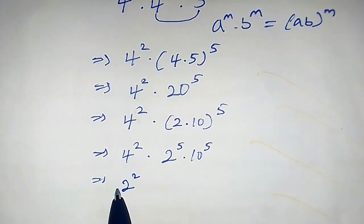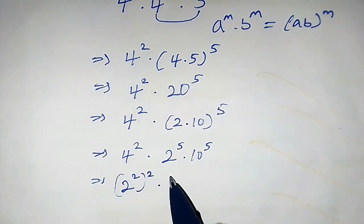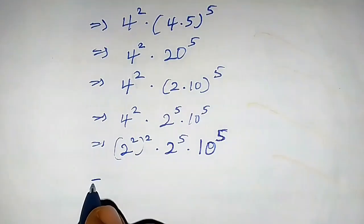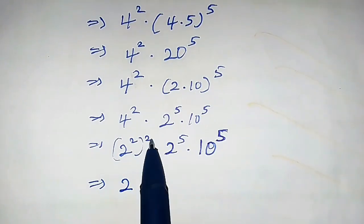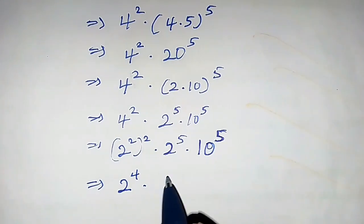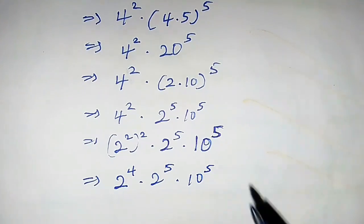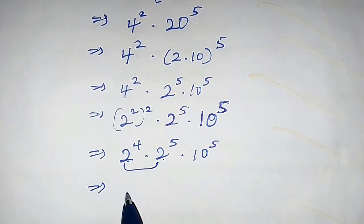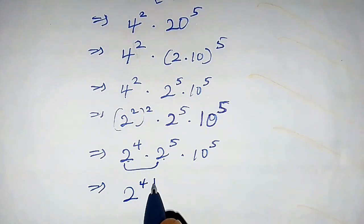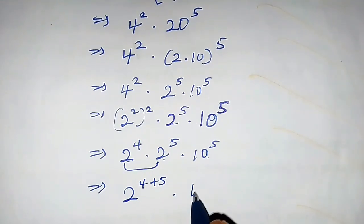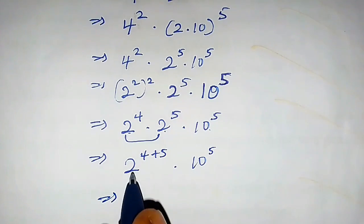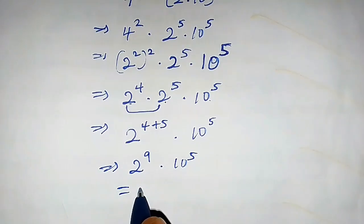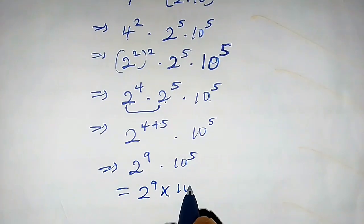Now, 4 can be written as 2 squared, so we have 2 squared times 2 times 2 raised to power 5 times 10 raised to power 5. This gives us 2 squared times 2, which is 4, times 2 raised to power 5 times 10 raised to power 5. Combining the powers of 2 — same base, different exponents — we get 2 raised to power (4+5), which is 2 raised to power 9, times 10 raised to power 5.